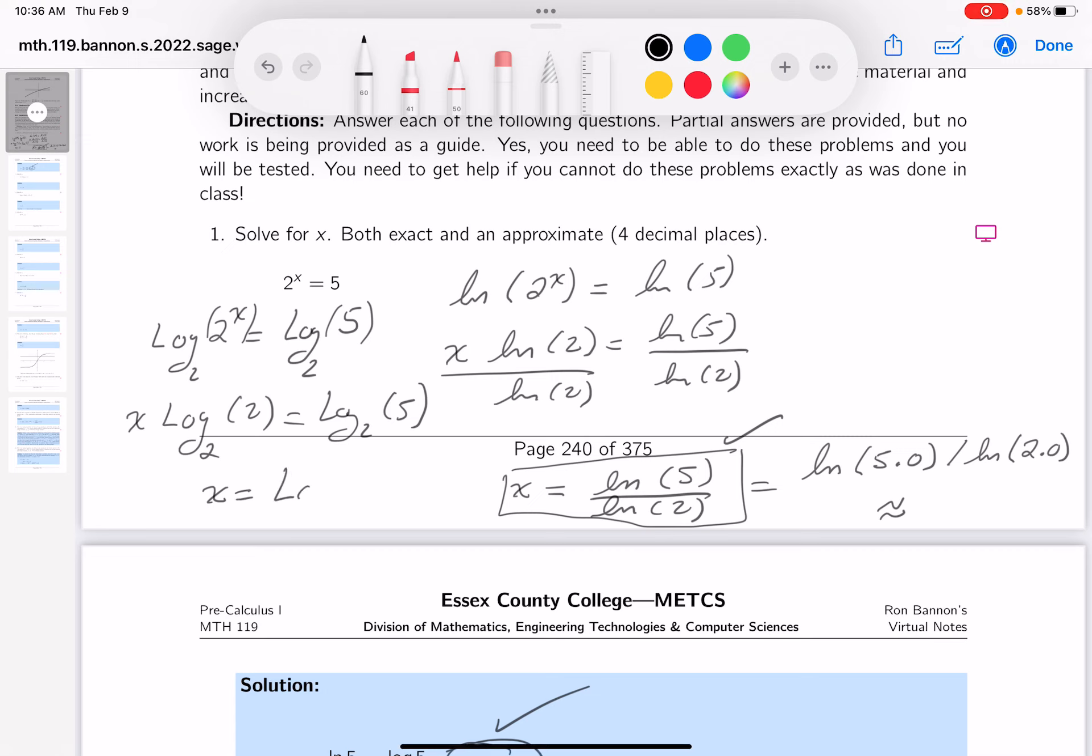x equals log base 2 of 5. By the way, it's the same thing as the natural log of 5 over the natural log of 2. But this is also a good answer if you're on the exam and you want to use log base 2. All right? Thank you.